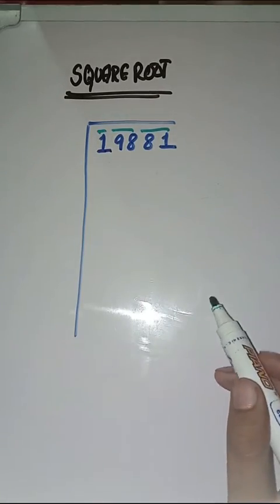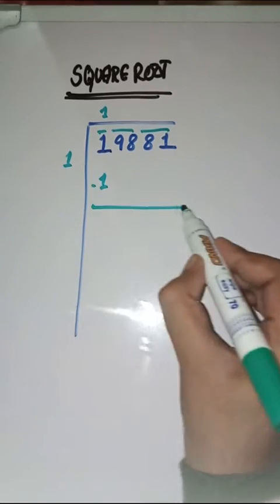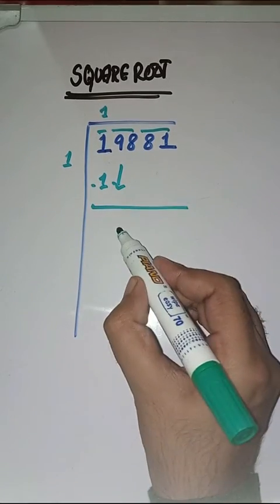So, now, one ones are one, minus we have to get zero. Next pair is 98. We have to take it down.